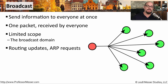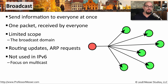You commonly see broadcasts used for things like routing updates and operating system communication. It's also common to see broadcasts used with IP version 4 when an ARP request is made across the network. But broadcast frames could be problematic — if there are too many broadcasts and every device has to process every broadcast frame, it could slow down the overall performance of the network.